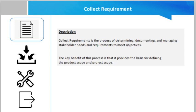Collect requirement process is the second process of the scope management knowledge area. In order to define the scope, the requirements of the stakeholders must be collected first. The main purpose of the collect requirement process is gathering stakeholder requirements in a project.